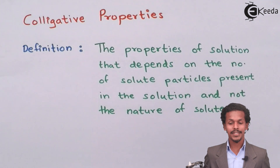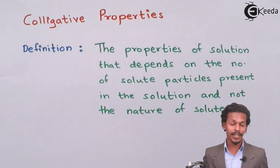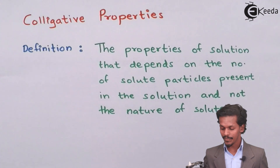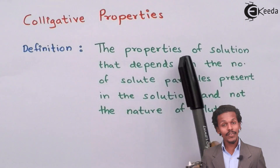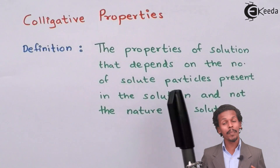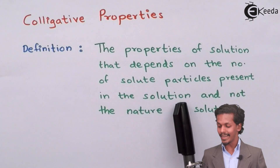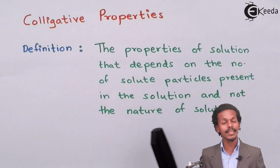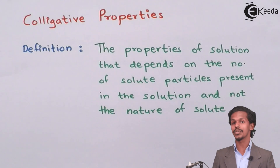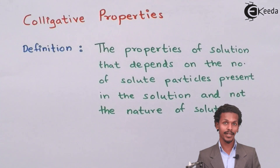Okay students, so let us know what is colligative property. Colligative property is nothing but the property of a solution that depends on the number of solute particles present in the solution, and not on the nature of the solute present in the solution.